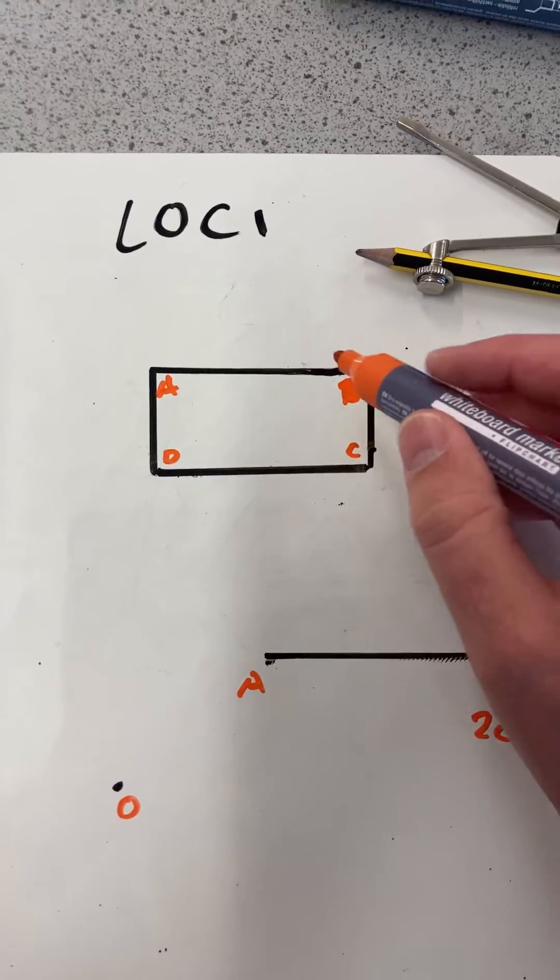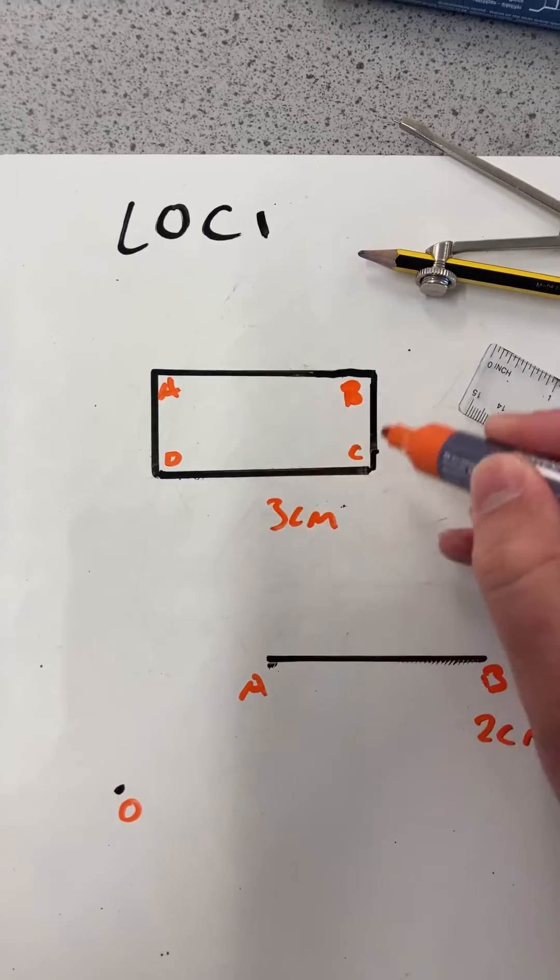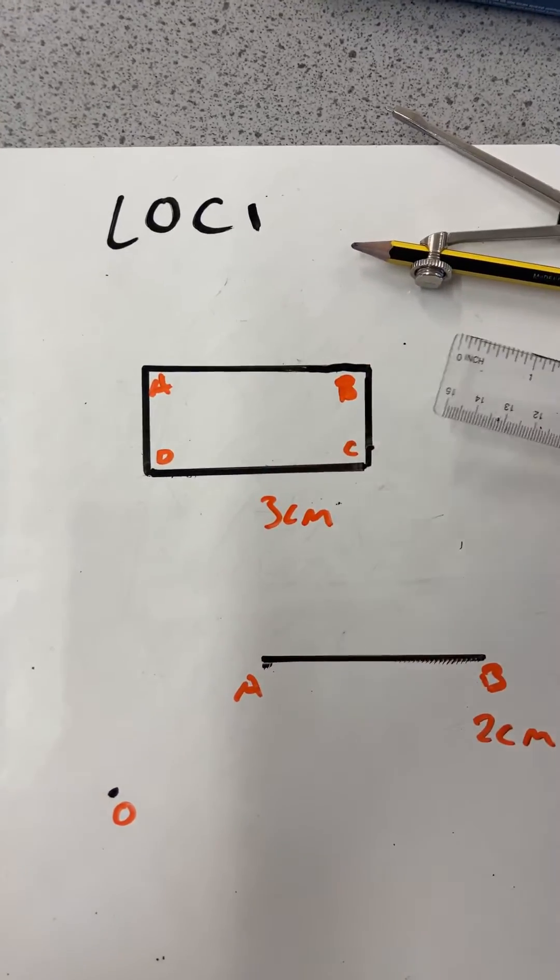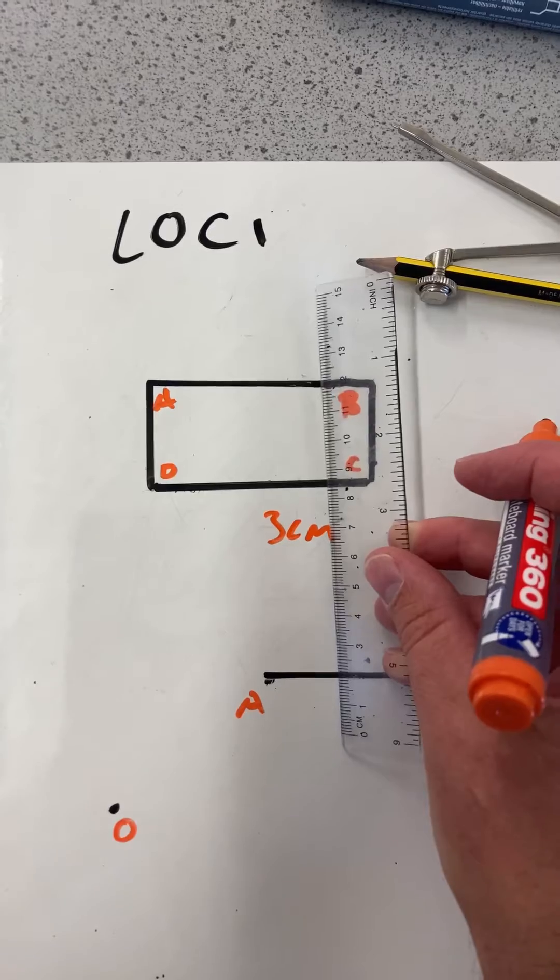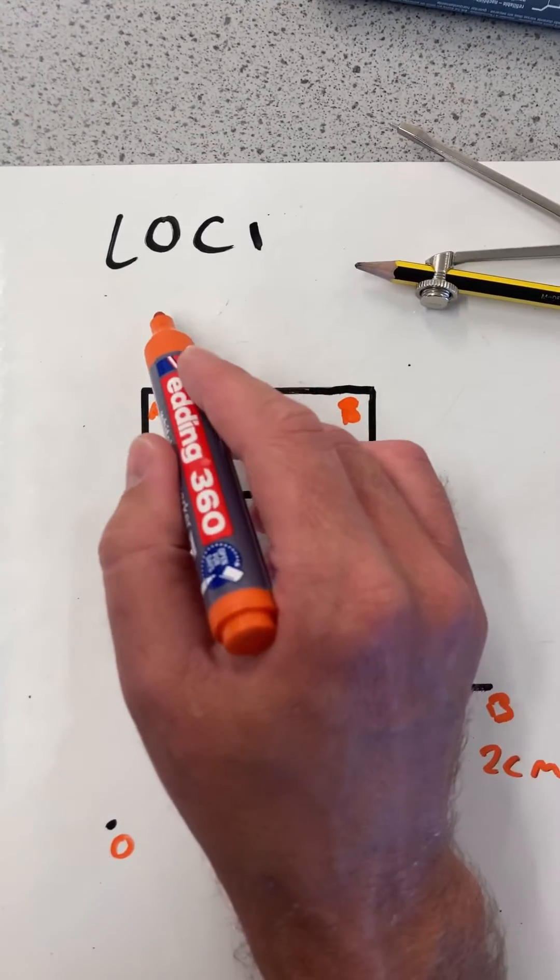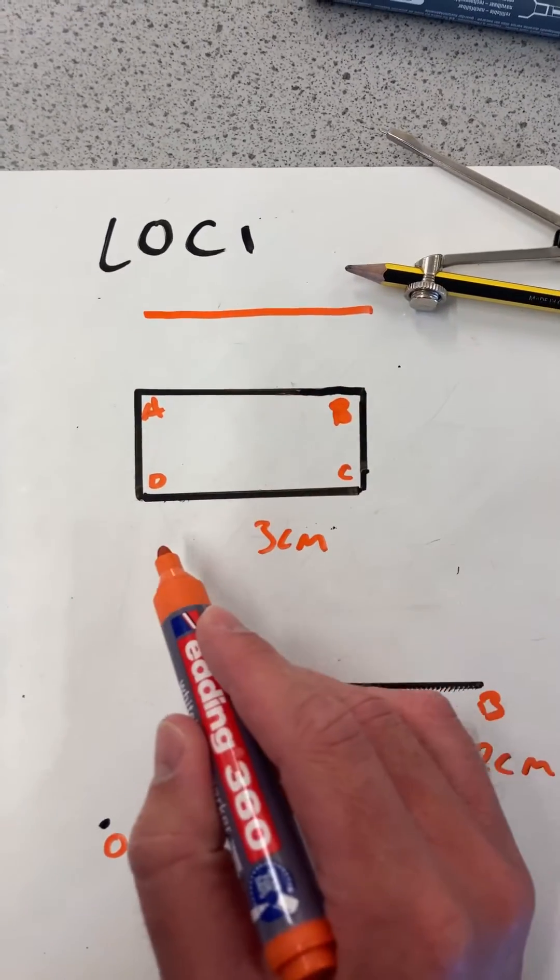Say we have to be exactly three centimeters away from each of these points, we'd get a ruler and we'd measure out a parallel line of three centimeters above and below.